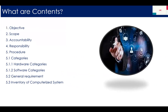First of all, for every SOP, we should have some objective — like the computer system validation or computer system assurance we are doing for our organization. Then scope: where is this scope? Means for the GXP system and all. Then accountability: who will be accountable for this SOP? And responsibility: how can we distribute the responsibilities — like who will be the third party, what is the system owner, who will be the process owner, and what is the role of quality assurance?